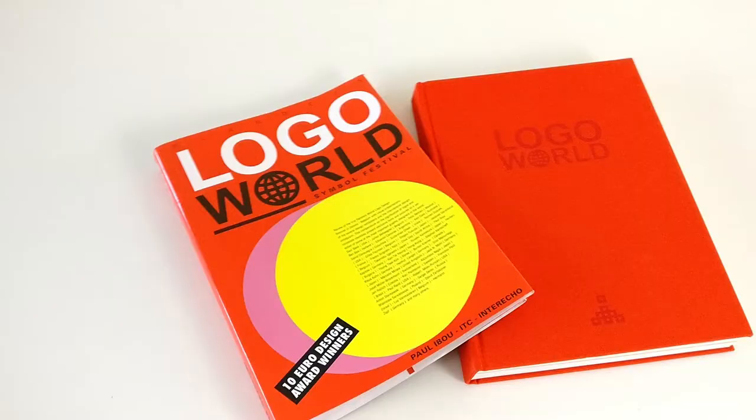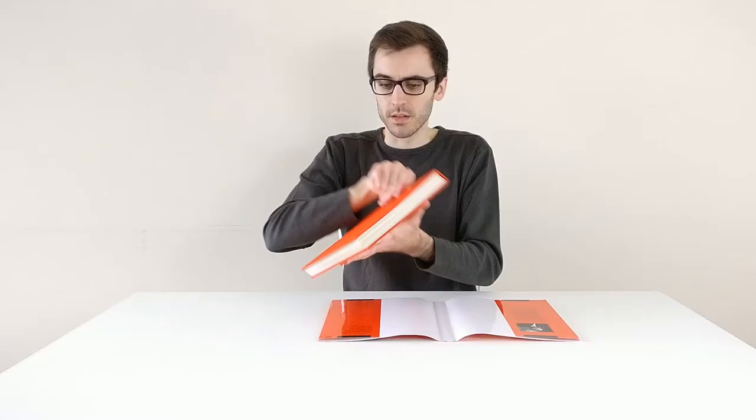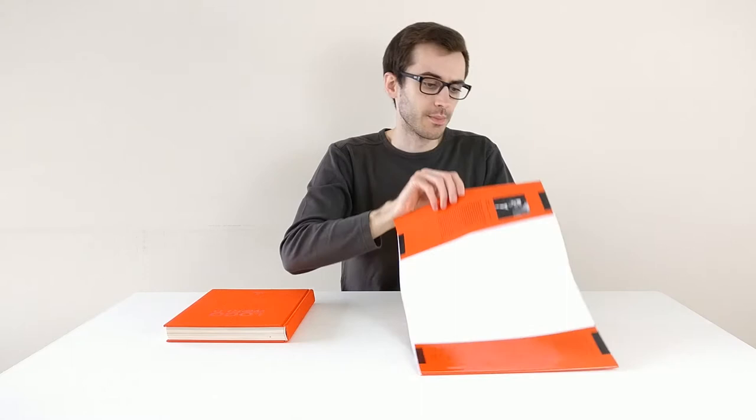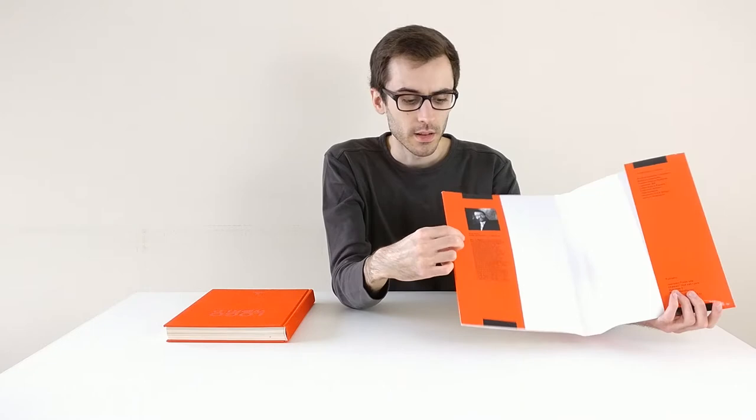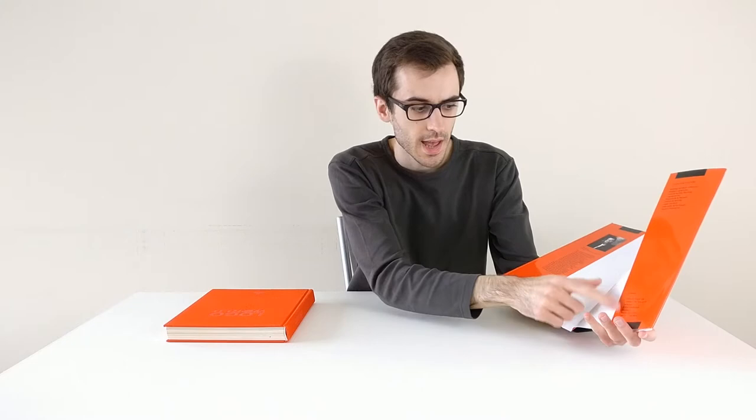This book is protected by the dust jacket. On the inside of the dust jacket we see a picture of Paul Ibu, a little bit of an explanation on himself, here other publications, and information on the publisher.